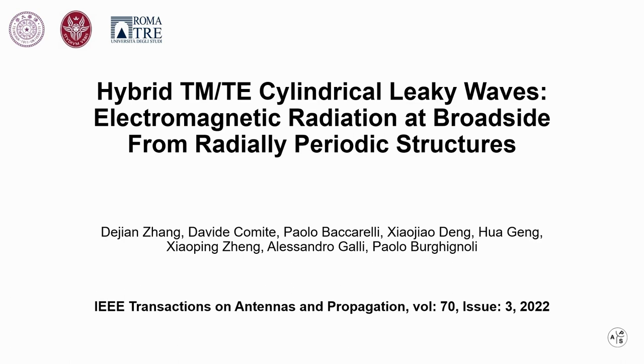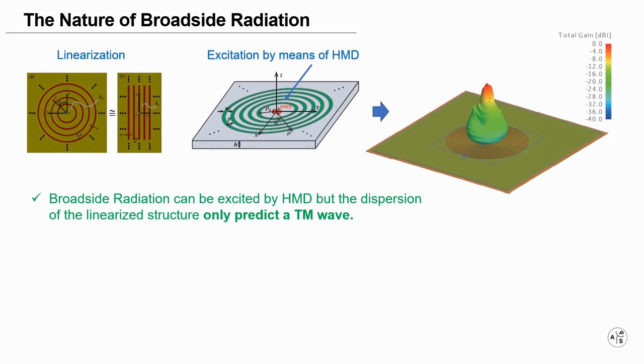This video will briefly introduce hybrid TM/TE cylindrical leaky waves electromagnetic radiation at broadside from radially periodic structures. The relevant work can be found in IEEE Transactions on Antennas and Propagation. If properly excited, broadside radiation can be excited by means of a horizontal magnetic dipole.